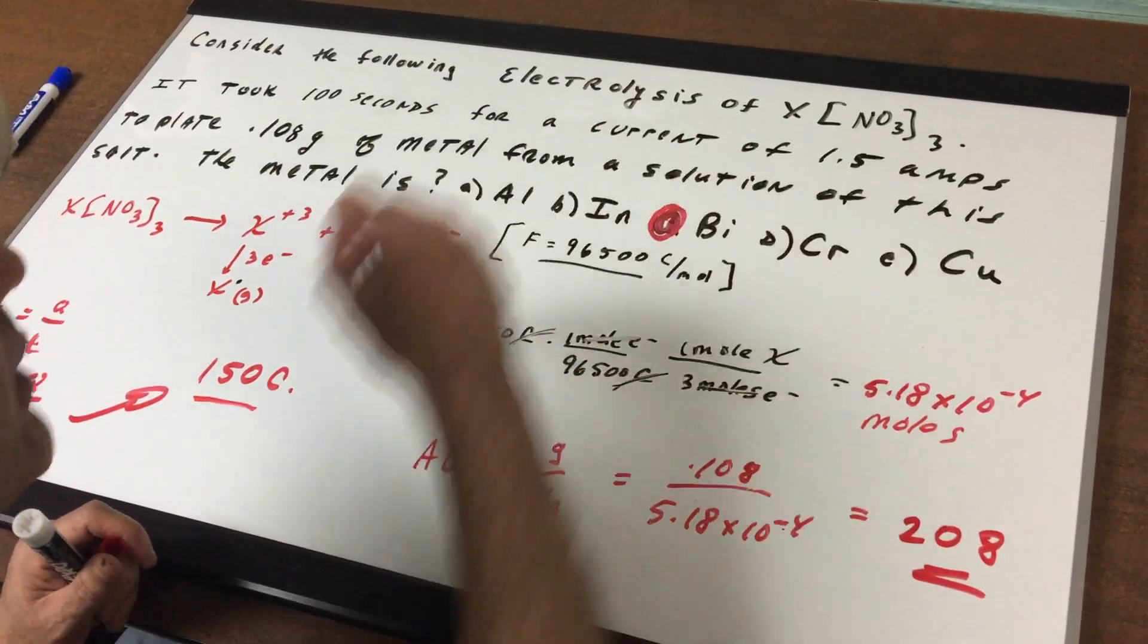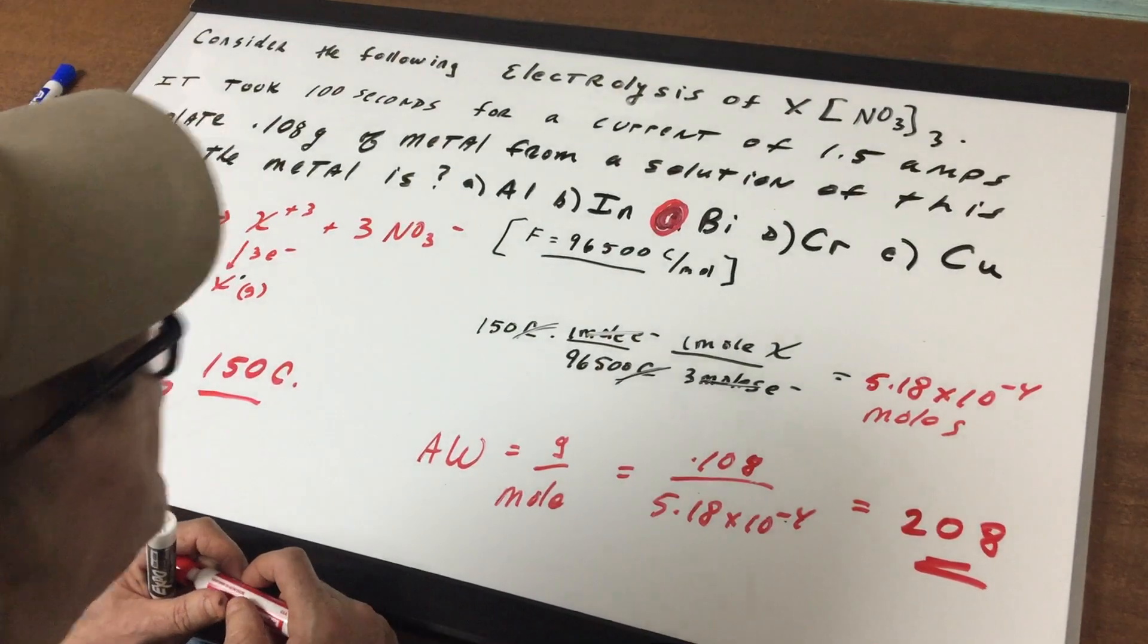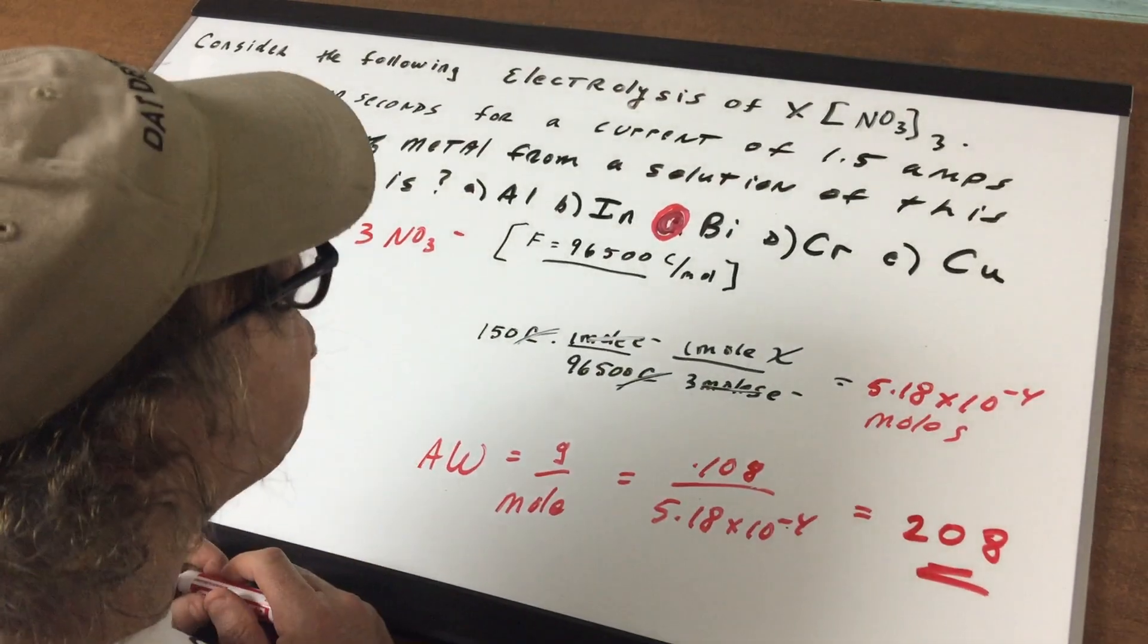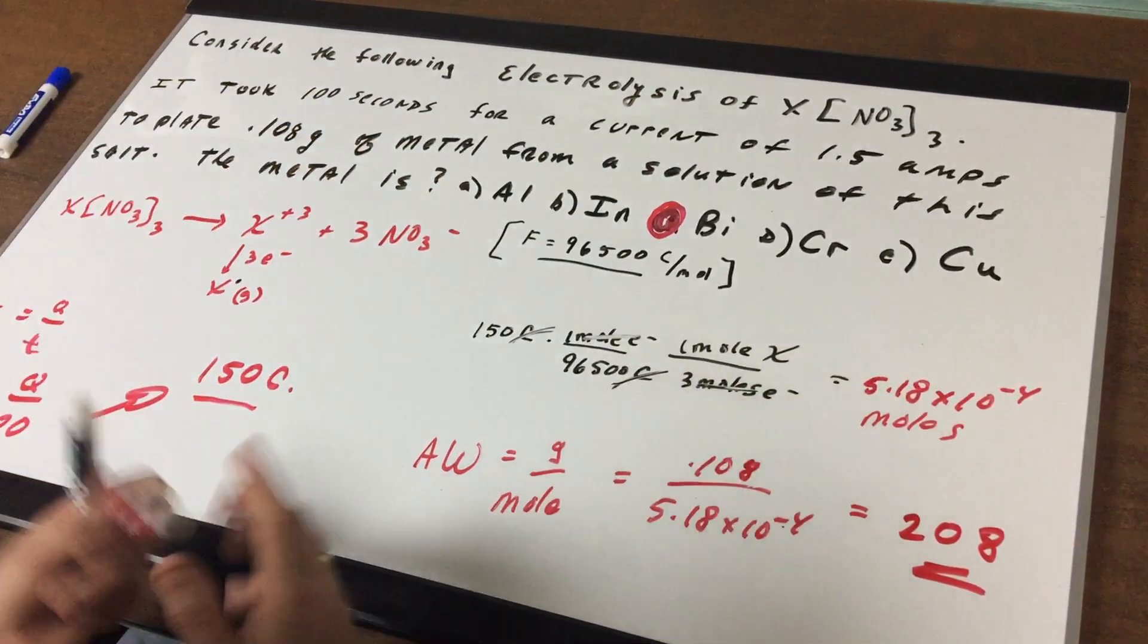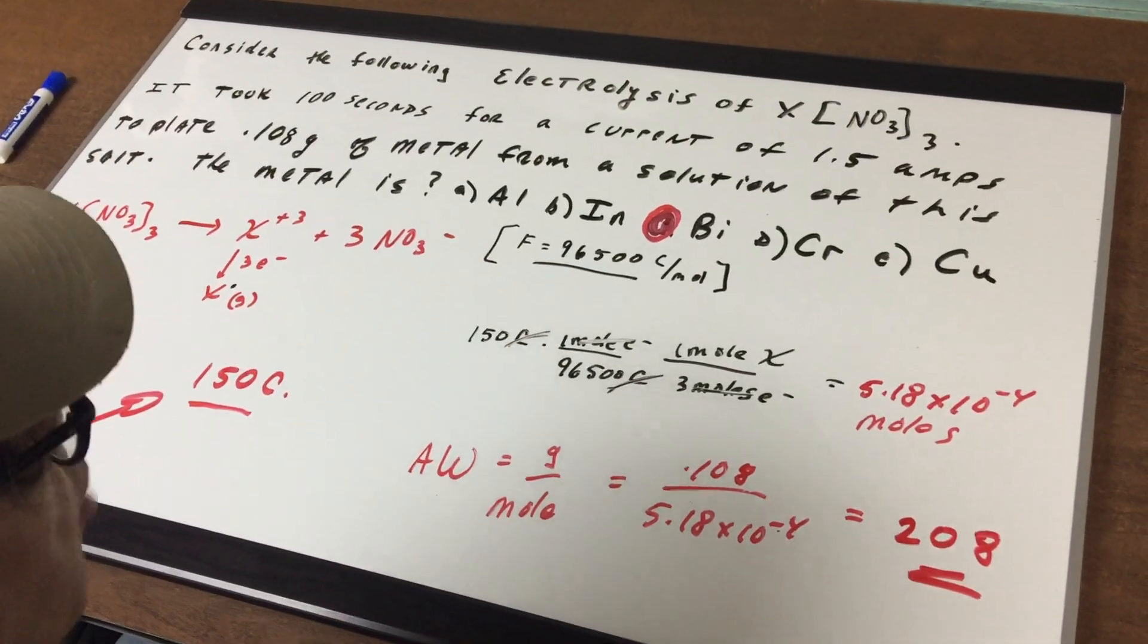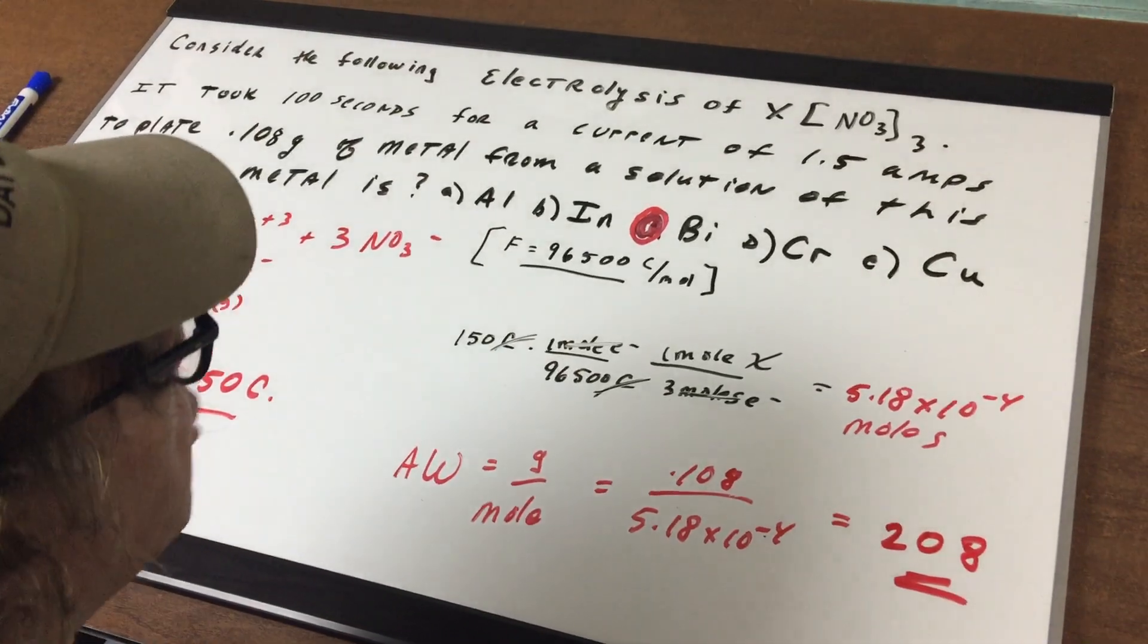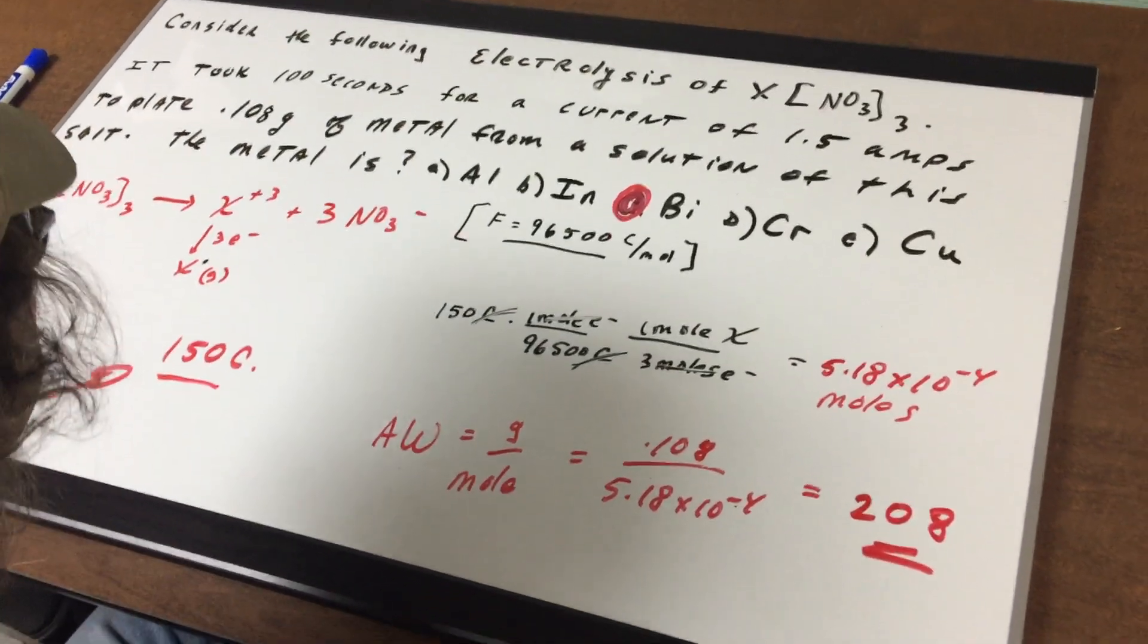So the correct answer is bismuth. So this compound would be a bismuth 3 nitrate. That wraps this up. I hope this helps. Go to the DAT Destroyer. You'll see a few more questions on electrolysis and you'll be set for the DAT. All right. That's it. Bye-bye.